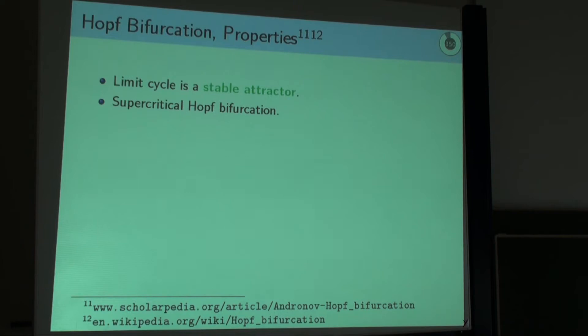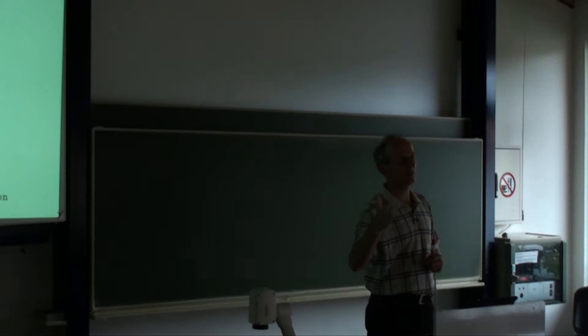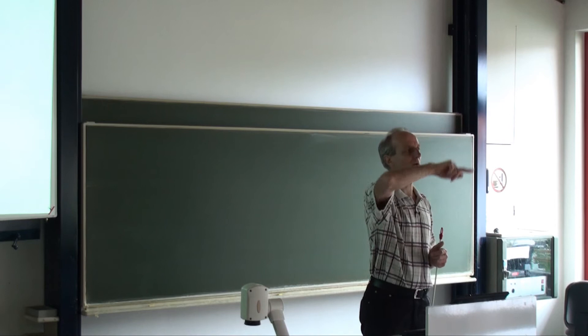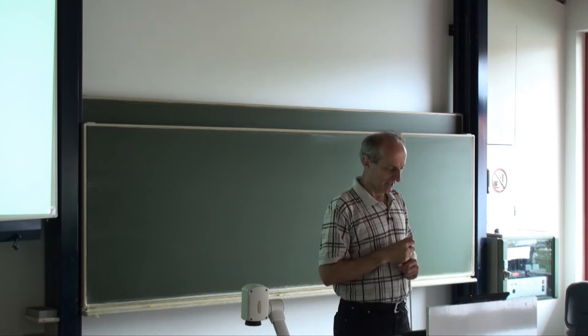This is also called a supercritical Hopf bifurcation. It's a bifurcation because if you look at the dependence of results on the parameter alpha, we may have behavior spiraling out from the initial value to the limit cycle, or spiraling inward to the limit cycle.